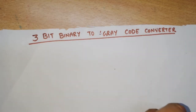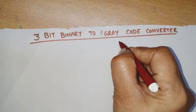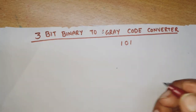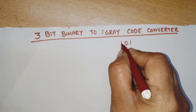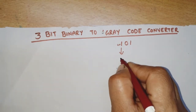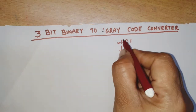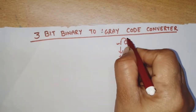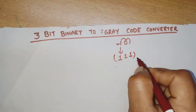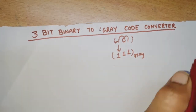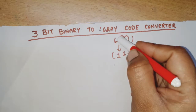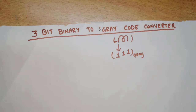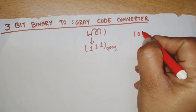First, let's see how we can convert a binary number into gray code. For example, take the 3-bit number 1-0-1. The first step is that the MSB bit stays the same. Then for each subsequent bit, we XOR adjacent binary bits: 1 XOR 0, then 0 XOR 1. So the gray code for 1-0-1 is 1-1-1. Another example: for 1-1-0, the result is 1-0-1.